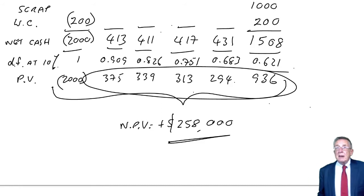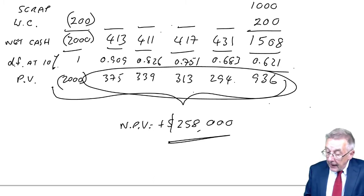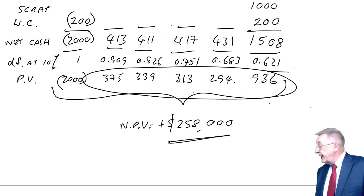So before I explain what that is and why, let's first of all do example two, which says for the project in example one, calculate the internal rate of return. And if you remember from my earlier lectures on the cost of debt, for the internal rate of return we make two guesses and we approximate.